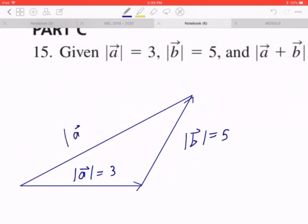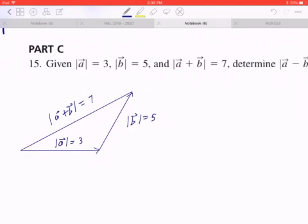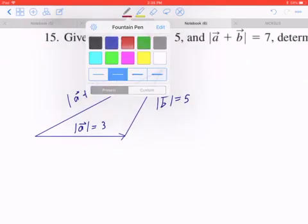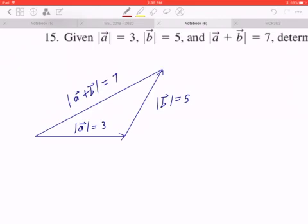And the sum of vectors A and B, the magnitude is going to be 7. So your goal is to find the magnitude of A minus B. So if you extend this diagram and form a second triangle, remember opposite vectors are the same in magnitude but opposite in direction.